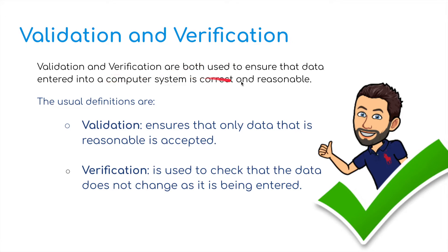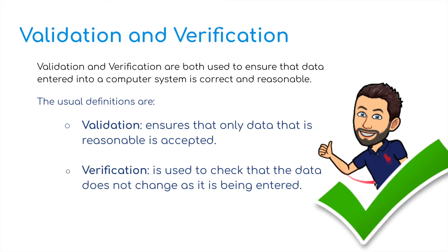Validation and verification are both used to ensure that data entered into a computer system is correct and reasonable. Validation ensures that only data that is reasonable is accepted. Verification is used to check that the data does not change as it is being entered. They're both there to check that the information inputted into the computer is correct.